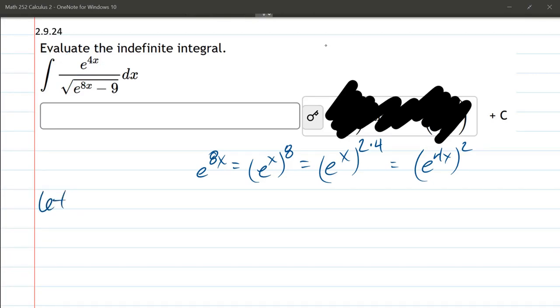So, what we're going to do is let u equal e to the 4x. Remember, the derivative of e to the x is e to the x, so du equals e to the 4x times the derivative of 4x, which is 4, dx.